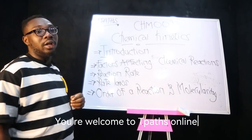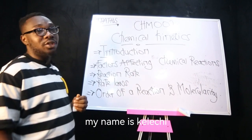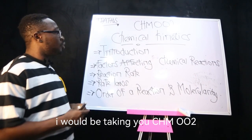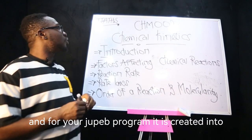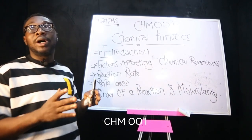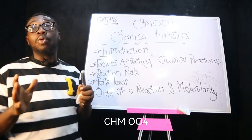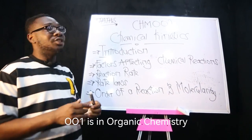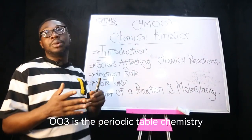Welcome to T-Parts Online JUPEB tutorial. I'm your tutor for today, my name is Kelechi. I will take you through CHM O2. I know you are familiar with chemistry, and for your JUPEB program it's split into CHM O1, CHM O2, CHM O3, and CHM O4. O1 is inorganic chemistry, O2 is physical chemistry, O3 is the periodic table chemistry.